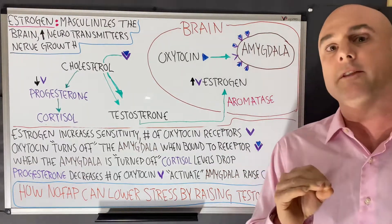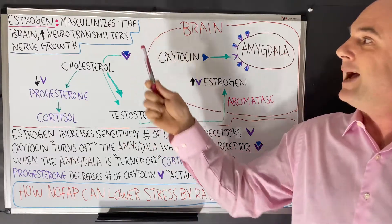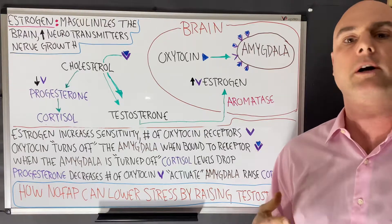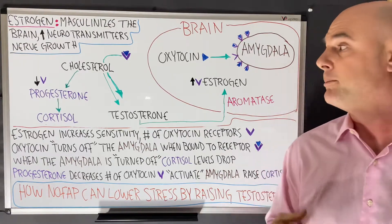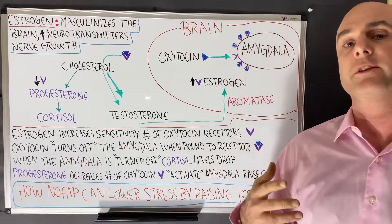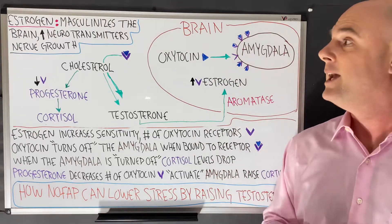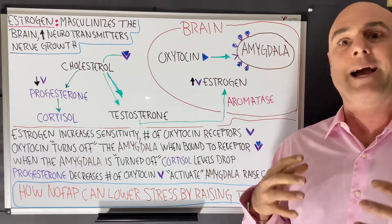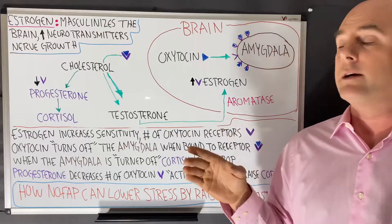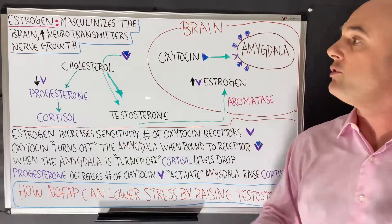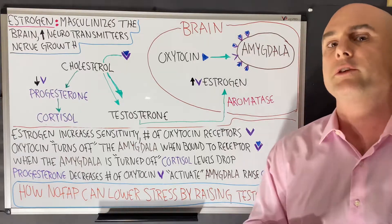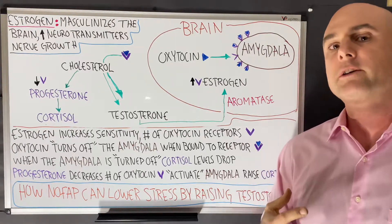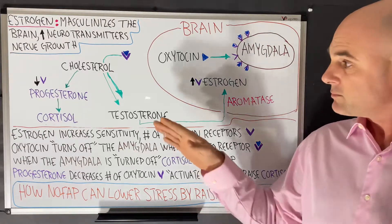Not only that — estrogen masculinizes the brain. A lot of people think testosterone is the reason we're so manly, but it's actually estrogens in the brain, especially during early development, that help masculinize the brain and develop masculine brain areas. Estrogens in the brain also increase neurotransmitters and nerve growth in certain brain regions.